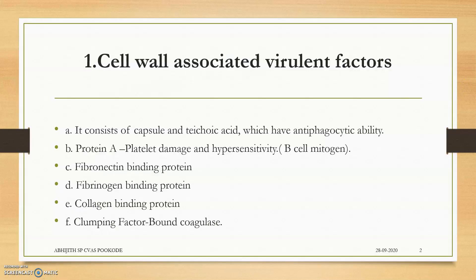The first cell-associated virulence factors: they are actually the capsule and teichoic acid, which have antiphagocytic ability. That is, the teichoic acid has antiphagocytic ability. Protein A is a very important cell-wall-associated virulence factor. It is actually a B-cell mitogen. It causes platelet damage and hypersensitivity. Protein A is present in which bacteria — this is a question used in most examinations. The clumping factor, the bound coagulase, is also an important cell-wall-associated virulence factor.